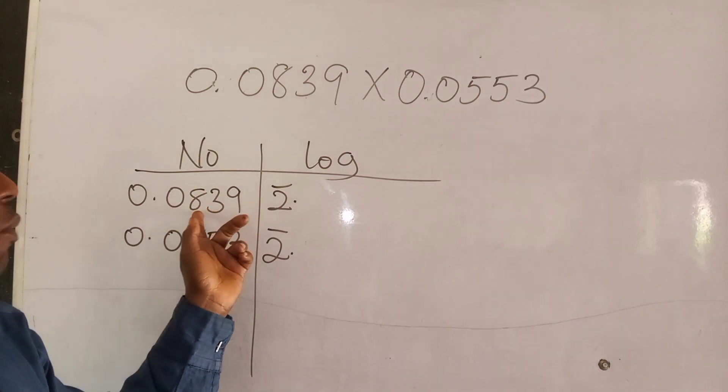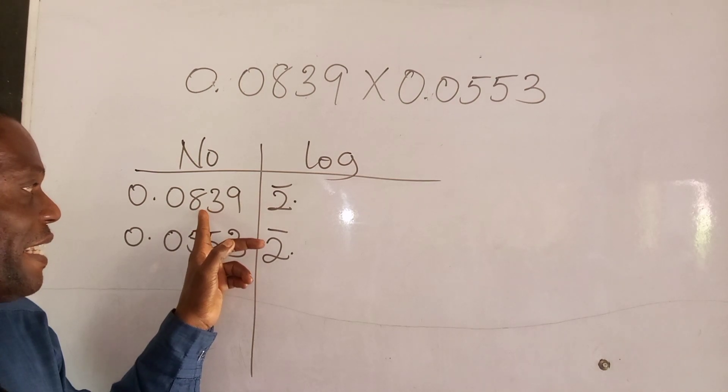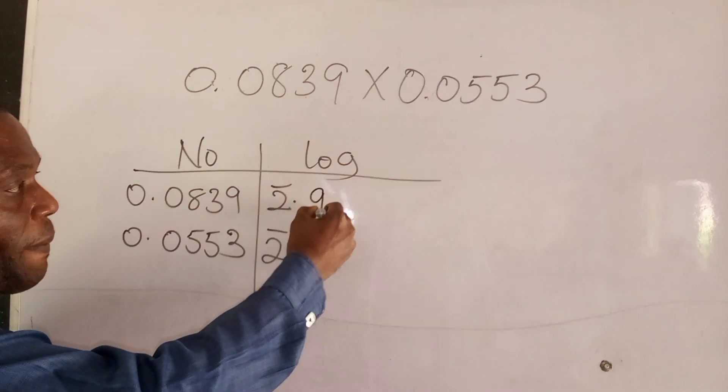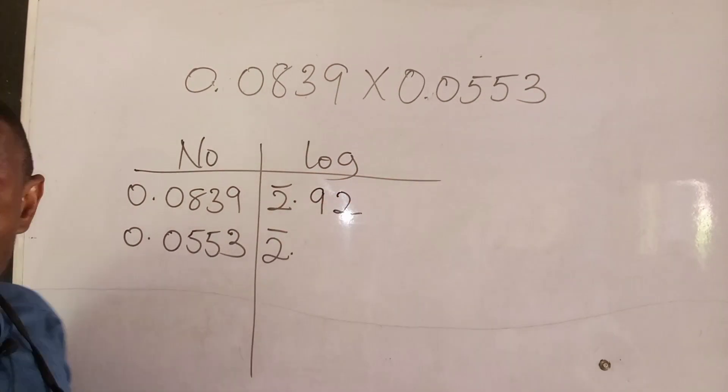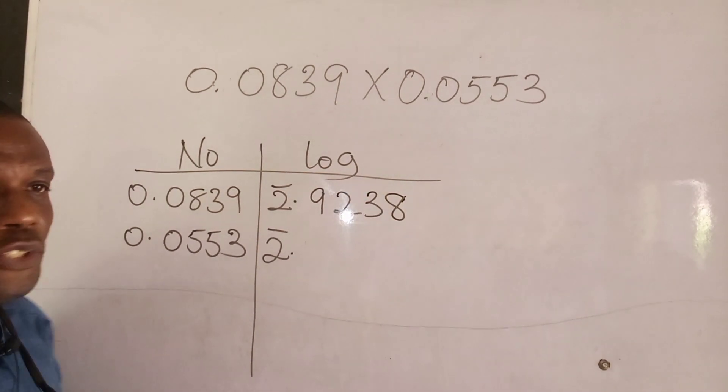Now I want us to, using your log four figure table, what is 83 under 9? What is 83 under 9? 9238. 9238. 9238.